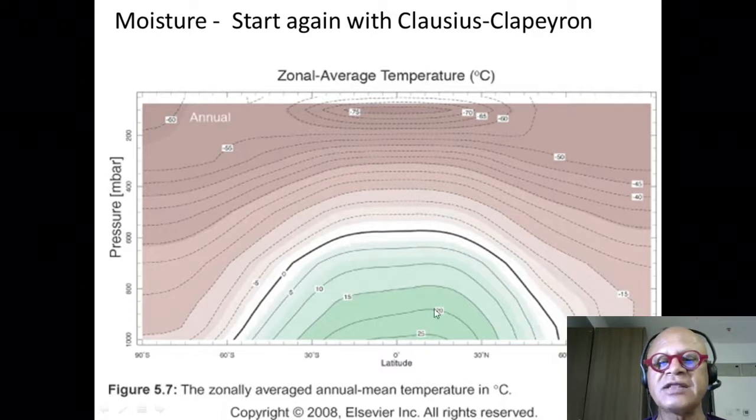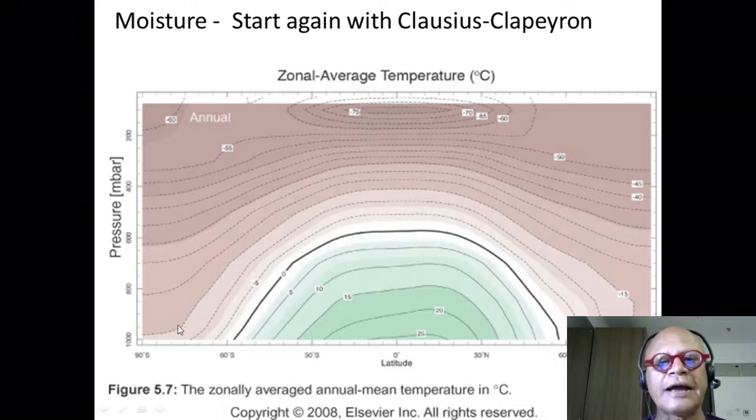So here is our temperature again, warm tropics extending into the subtropics and then cold higher latitudes, and of course temperature dropping off with height up to the tropopause and then you get the stratosphere.